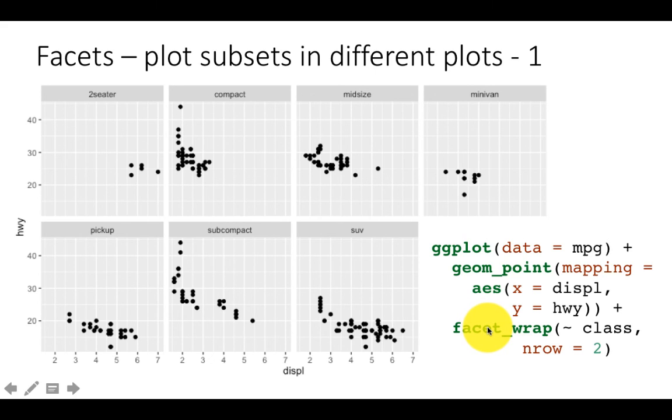Facet_wrap means generate many facets and wrap them around. We need to tell it which variable to create facets on. At this point we only said the two aesthetics x and y, we have not told it to split up the data by any particular variable. This is where we're saying split it up by class - tilde class is the way you specify the variable on which you want to create the facets.